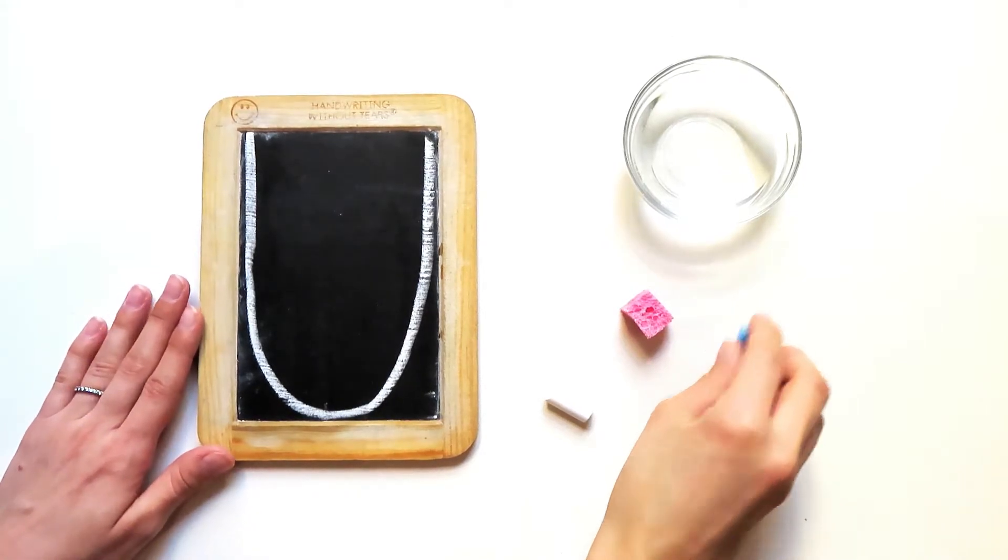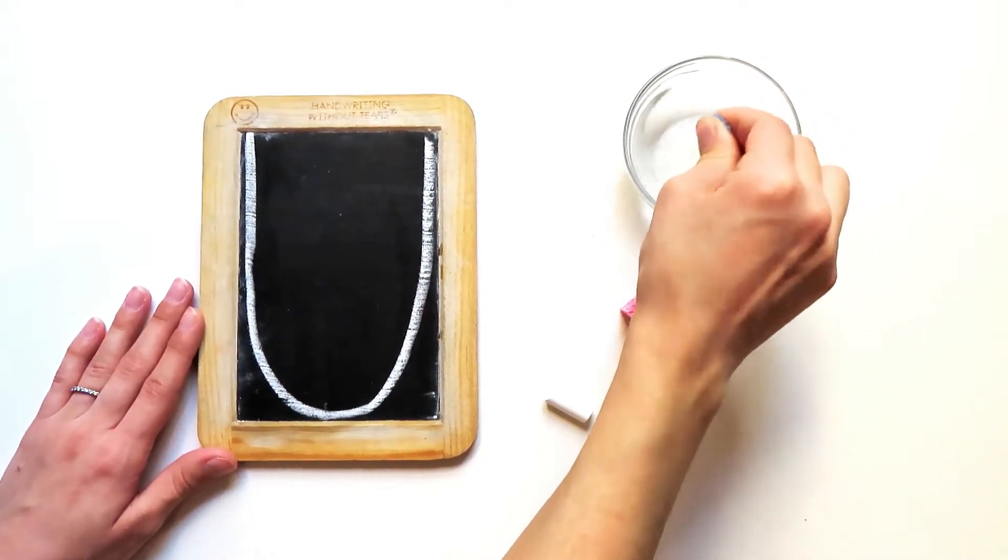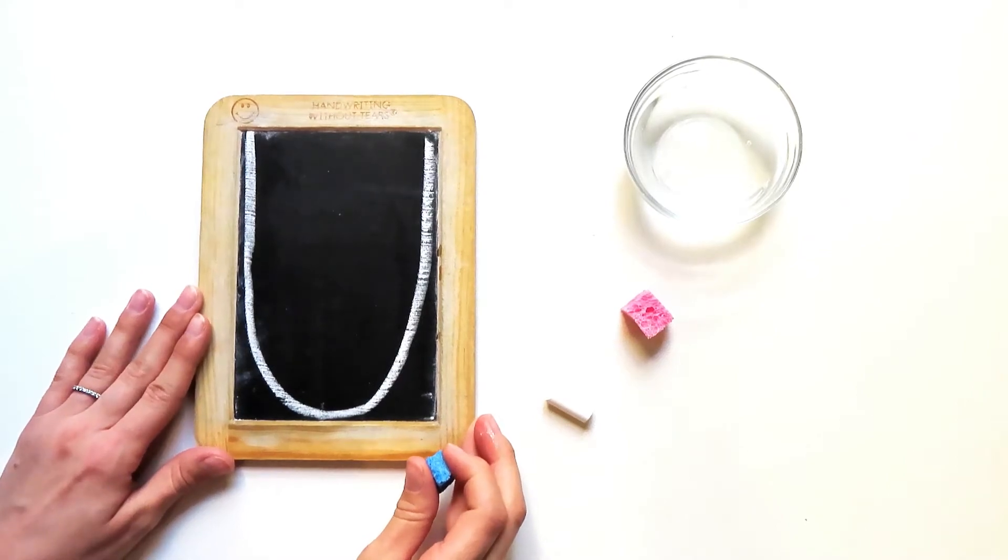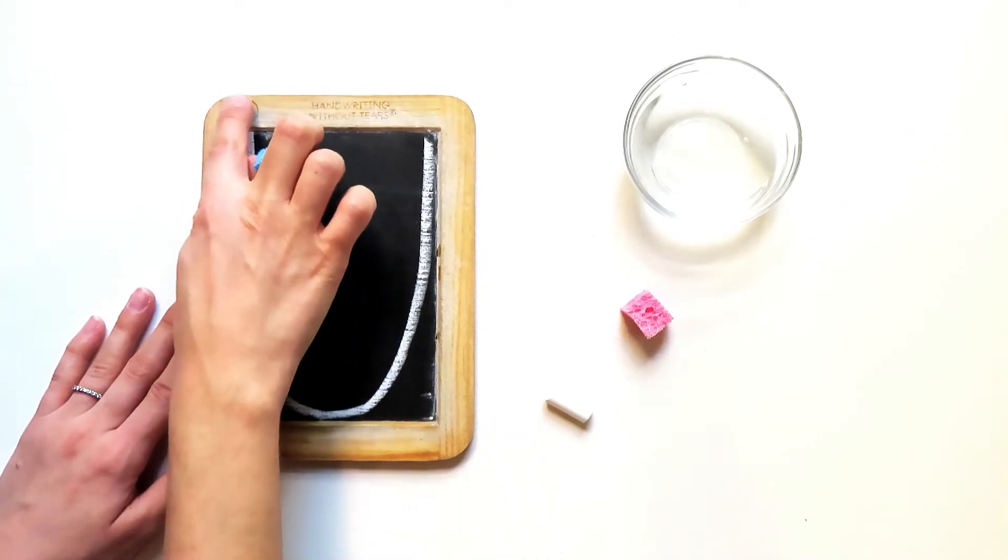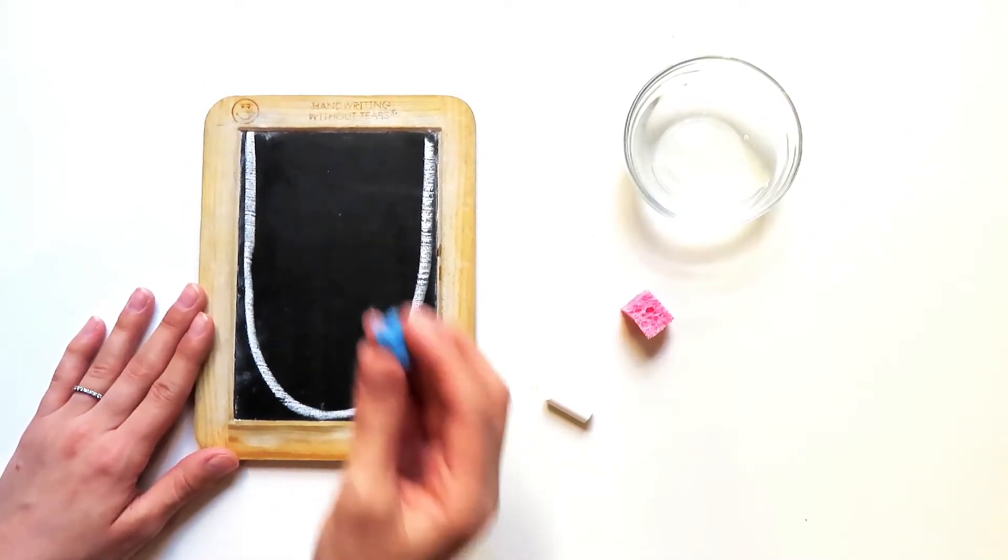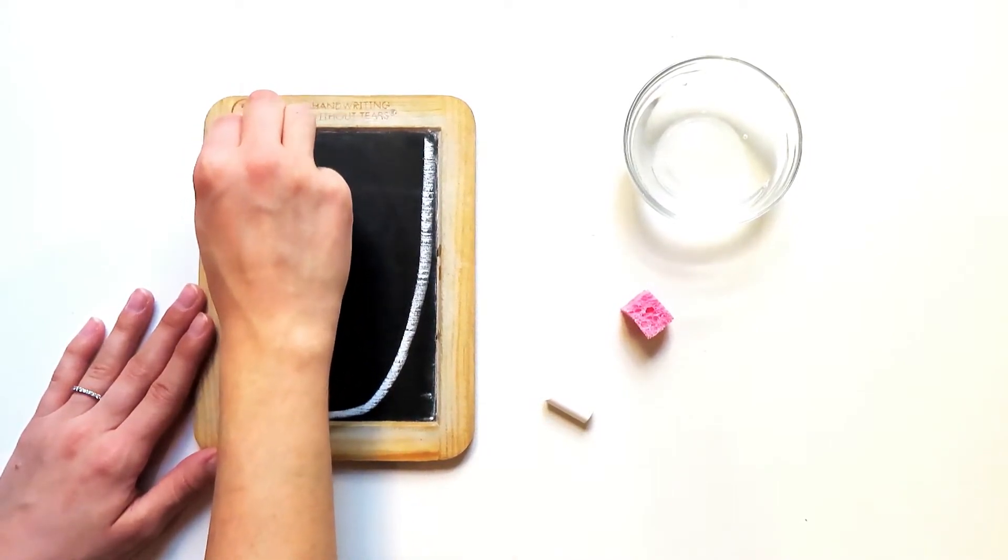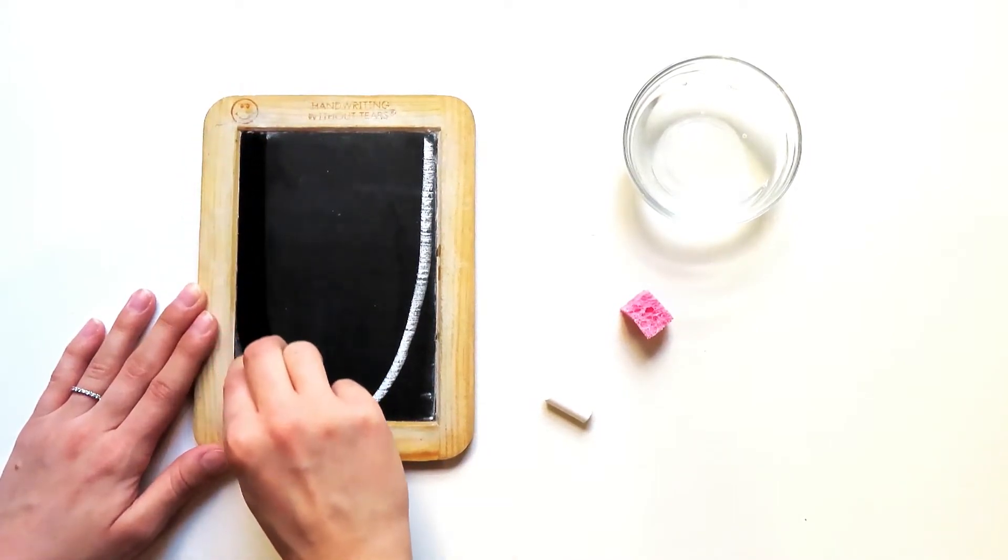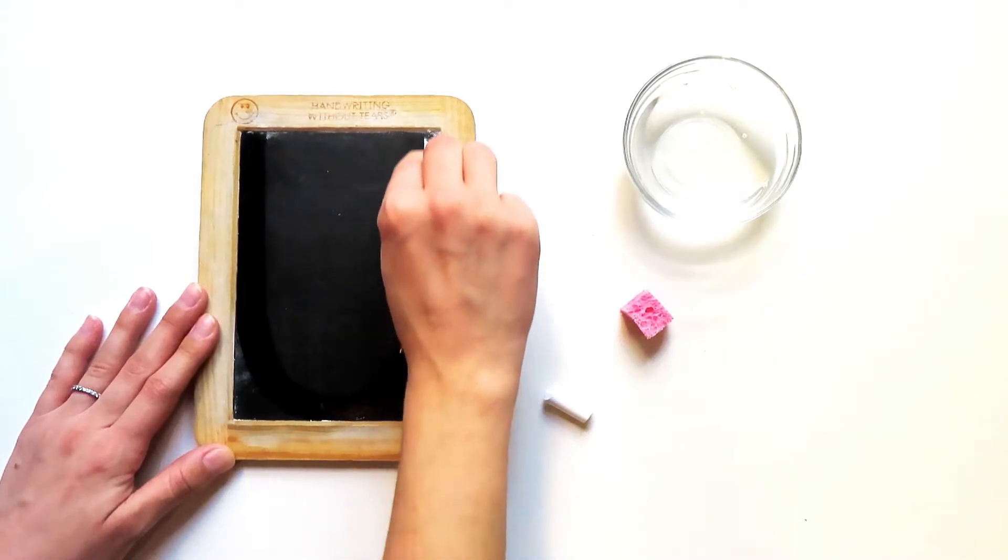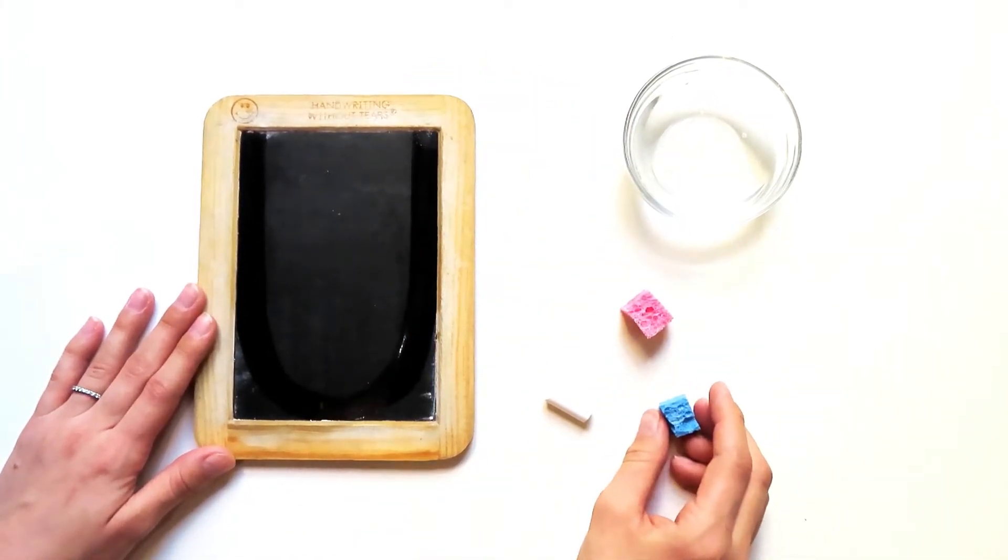I'm going to start by dipping my wet sponge in the water and giving it a big squeeze. Okay, capital letter U starts at the smiley corner. Here I go. Down, scoop, up. That was easy.